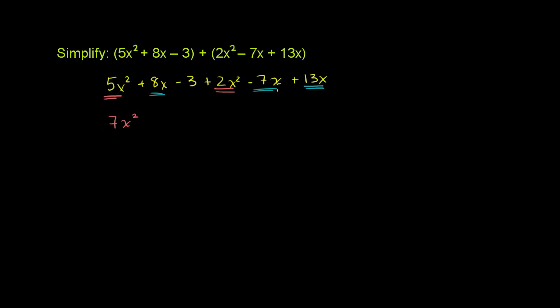So if you have 8 of something minus 7 of something, you're just going to have 1 of that something. And then if you add 14 of that something more, you're going to have 15. So this is going to be plus 15x.